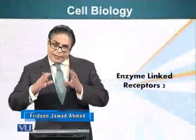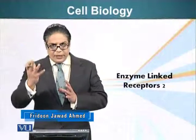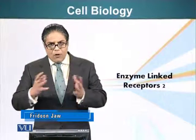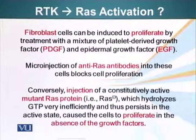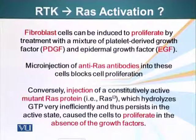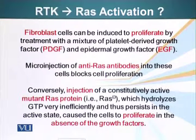RAS is activated by receptors that receive signals for a cell to divide. How do we know that? Let's look at a simple experiment. Fibroblasts can be induced to proliferate by treatment with a mixture of platelet-derived growth factor and epidermal growth factor. Both these growth factors activate receptor tyrosine kinases. If we inject RAS antibodies,